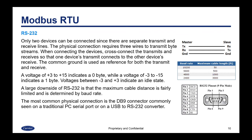Voltages between negative three and plus three indicate an idle state. A large downside of RS-232 is that the maximum cable distance is fairly limited and is determined by the baud rate. At 19,200 baud, for example, the maximum distance would be 50 feet. The most common physical connection is the DB9 connector, commonly seen on a traditional PC serial port or a USB to RS-232 converter, as shown at the right.